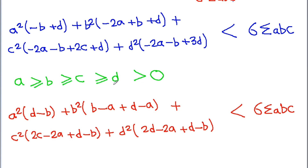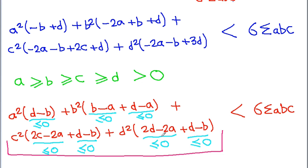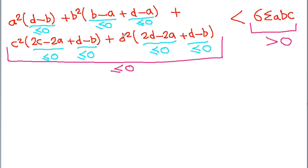Since D ≤ B, we have D−B ≤ 0. Since B ≤ A, B−A ≤ 0. Similarly D−A ≤ 0, 2C−2A ≤ 0, so each coefficient term is less than or equal to zero. Thus the left-hand side is ≤ 0. On the right-hand side, since A, B, C, D > 0, 6ΣABC > 0. Therefore LHS ≤ 0 < RHS, and the inequality is proved. Hence proved.